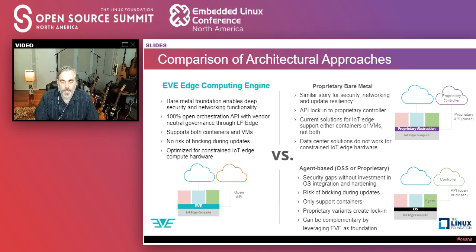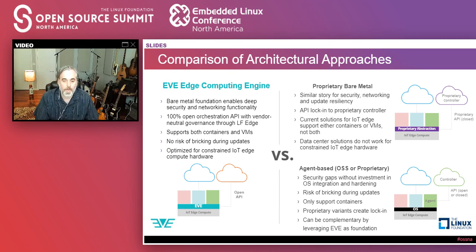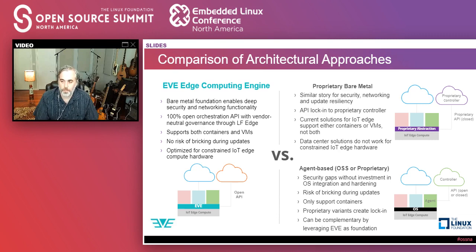Eve's advantages: completely open API with vendor-neutral governance through the Linux Foundation. Without neutral governance, you cannot build trust because of the necessary transparency. We support both containers and VMs. You can't brick the device during updates because Eve operates at the lowest level. It's optimized for constrained hardware outside of a physically secure data center — gateways, servers, or otherwise. That's why as a project community we think this is the right approach to do for IoT edge what Android did for mobile.